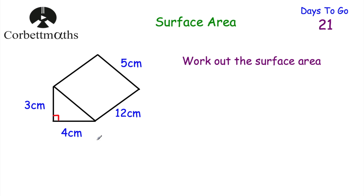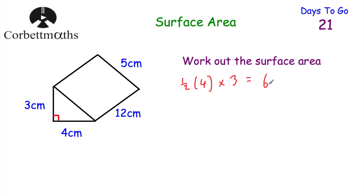The five faces are: the front, the back, the bottom, the right hand side (the slanted one), and the left hand side (the vertical one). Let's start with the front — it's a triangle. To find the area of a triangle we do half the base times the height. So half of 4 times 3: half of 4 is 2, and 2 times 3 equals 6 centimetres squared. So the area of the triangle on the front is 6 centimetres squared.